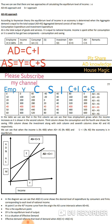As income increases, aggregate demand (C plus I) also increases. Aggregate supply equals C plus S, which equals national income Y. Both the aggregate demand and aggregate supply curves are upward sloping straight lines because they increase continuously at a constant ratio.